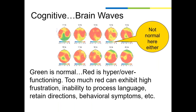Later we took him to get brain waves done. Your brain has five sections, each with different wavelengths associated with it. The red zones indicate hyper or overfunctioning — Adam was a very fun and wild child, but too much red can exhibit high frustration. He had all that yeast running around making him itchy, a lot of things going on in his body that needed to be managed. As a baseline, in the brain wave functional areas, he wasn't where he needed to be either.